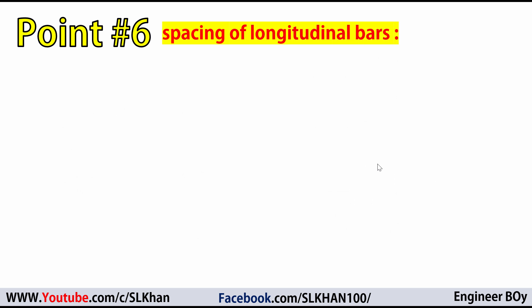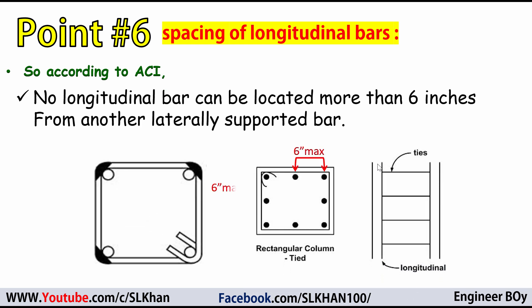Point number 6 is about the spacing of longitudinal bars. According to ACI, no longitudinal bar can be located more than 6 inches from another laterally supported bar. So the maximum distance between two main bars is 6 inches. The minimum spacing depends on the column design, but the maximum limit is 6 inches.